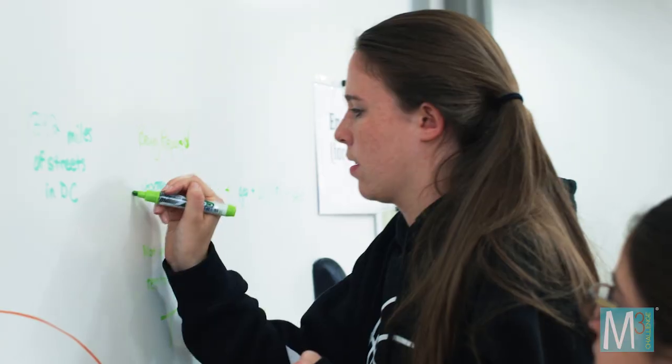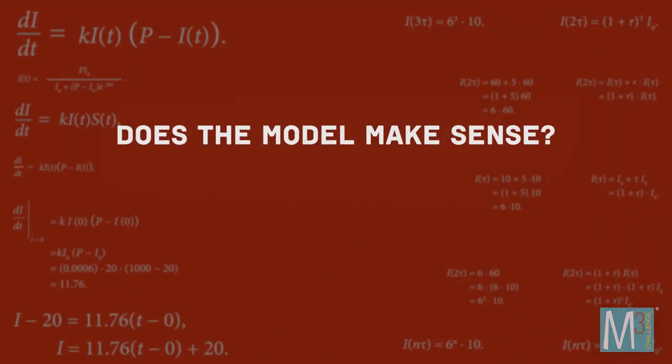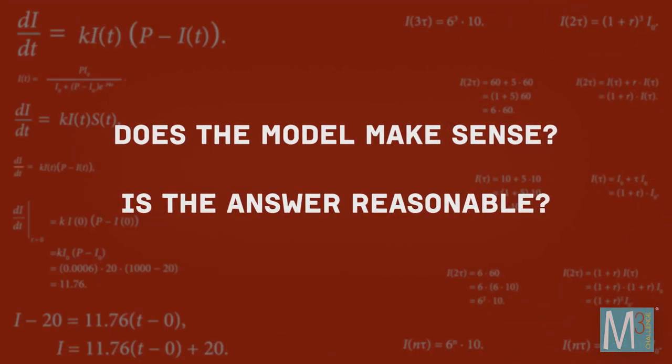During the analysis and assessment phase, one of the most important things to ask yourself is: does the model make sense? Is the answer reasonable? We had to do a lot of testing, so we took our three examples and took the data for each example and plugged it into the equation. And then we made sure that our answers made sense — for instance, you wouldn't want to have a million of something you should have about a hundred of.